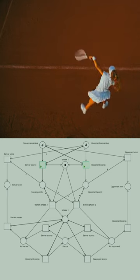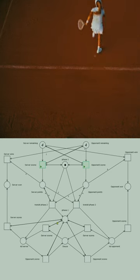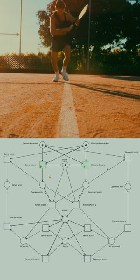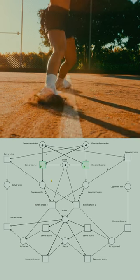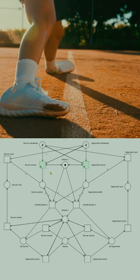Scoring in tennis is really complicated as you can see in this PetriNet, and we are not even considering the 15-30-40 way of scoring. Here it's just 1-2-3.